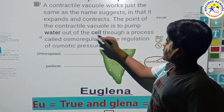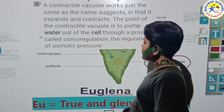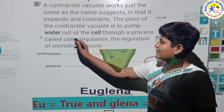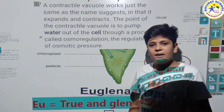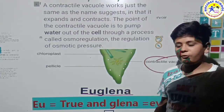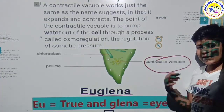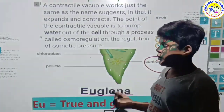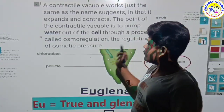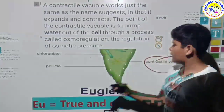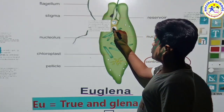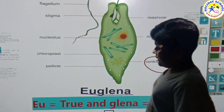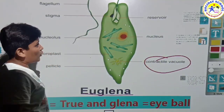This process of pumping water out of the cell through the contractile vacuole is called osmoregulation — the regulation of osmotic pressure. This word you have to remember: the process of throwing out water by the contractile vacuole is known as osmoregulation.